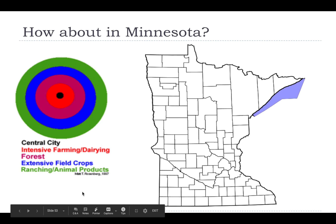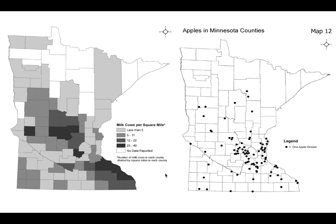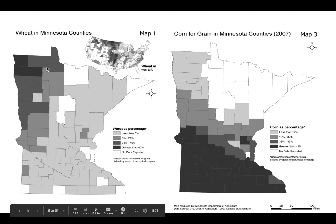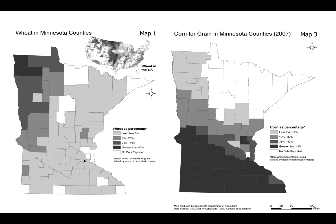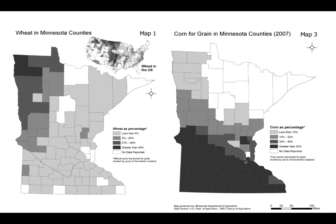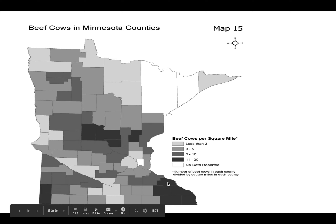How does it hold true in Minnesota? Milk fits in that first ring of von Thünen's model because it is a perishable good — they have to get it to market quickly, as it has a short milk shed. Wheat fits in the fourth ring, away from major markets, as it carries high volume at low weight with low transportation cost. Corn somewhat fits the third ring, although southern corn production is closer to the market in the first or second ring, so it is not exactly true.